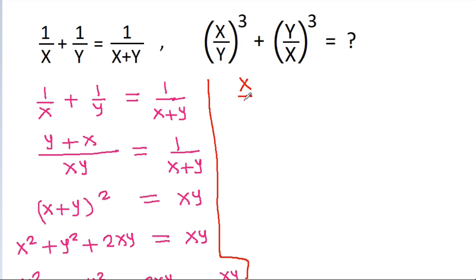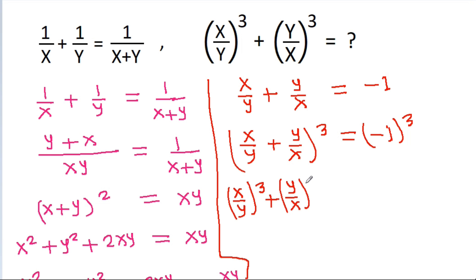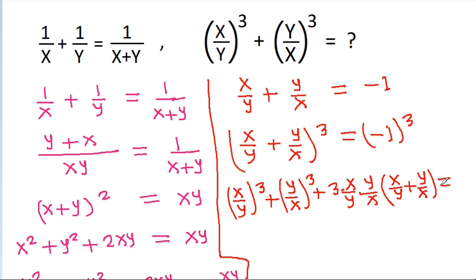We have x by y plus y by x is equal to minus 1. If we cube both sides, then x by y minus y by x cubed equals minus 1 cubed. This expands to x by y plus y by x cubed plus 3 times x by y times y by x times x by y minus y by x, equal to minus 1.